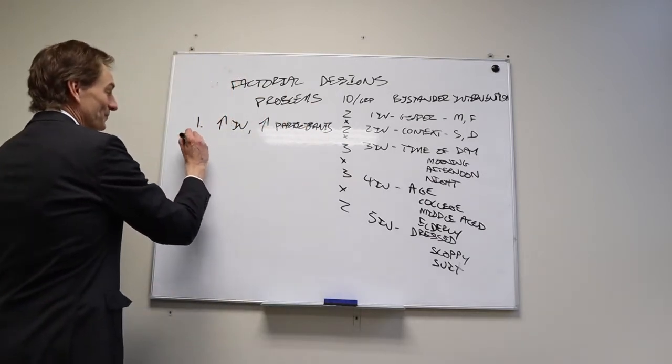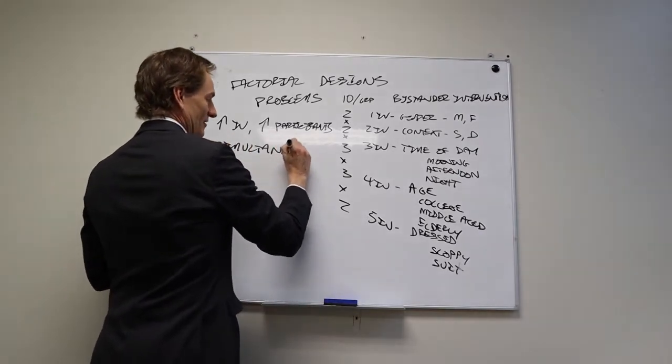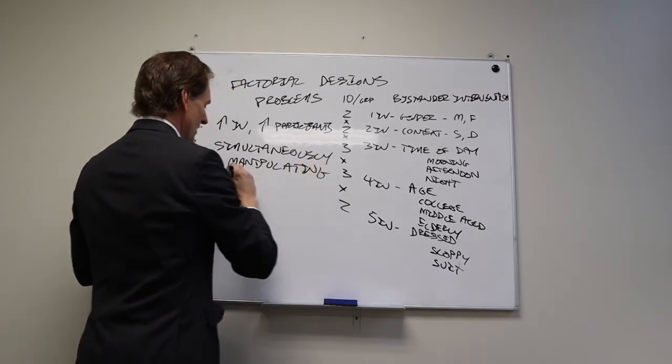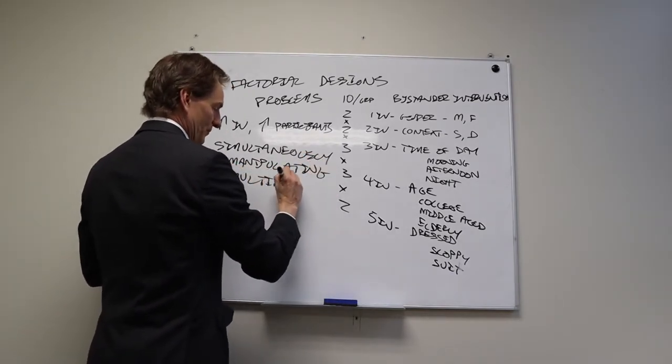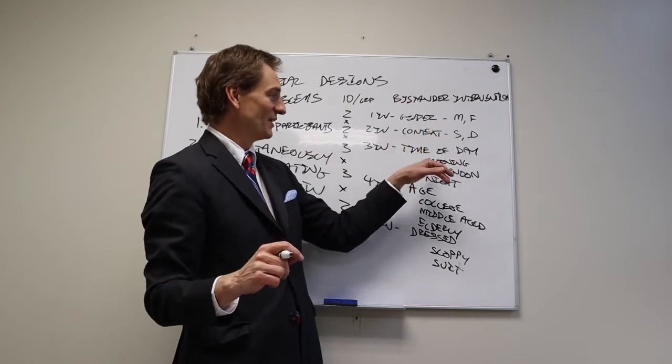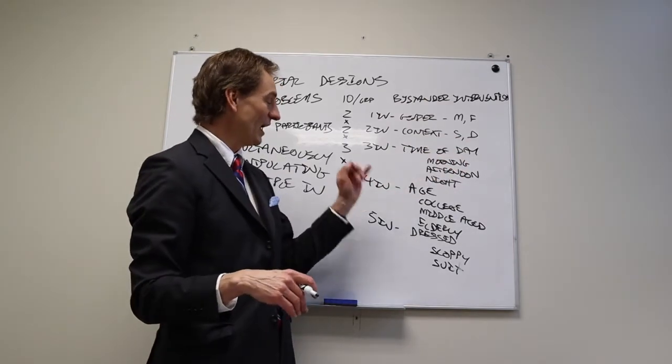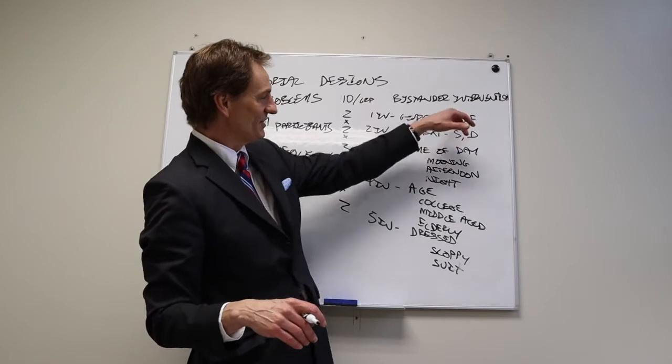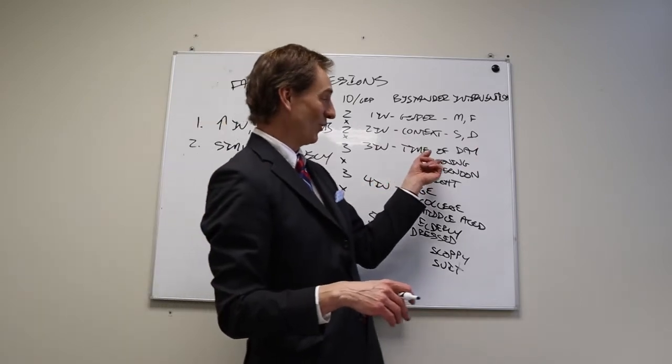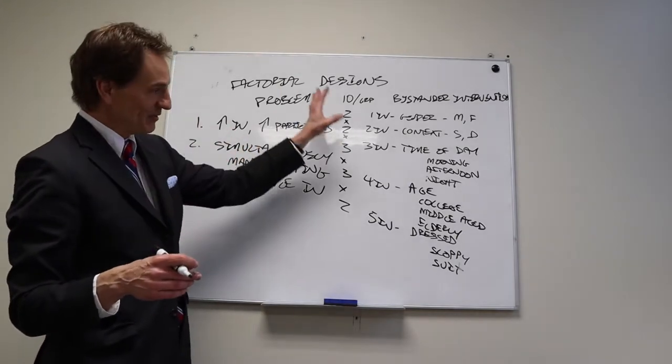The second problem comes with simultaneously manipulating multiple independent variables. Now I need a woman who acts sick in the morning, a middle-aged person at night to act drunk, someone in a suit in the morning to be drunk. It's difficult to simultaneously manipulate multiple independent variables.